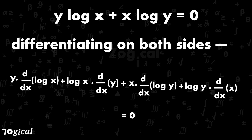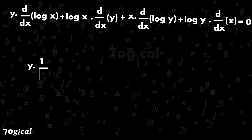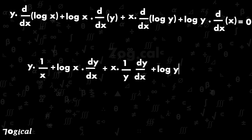Then we have y into 1 upon x plus log x dy by dx plus x into 1 upon y dy by dx plus log y into 1 is equals to 0.